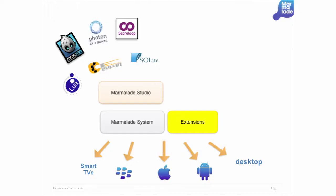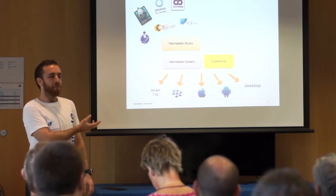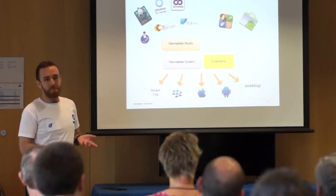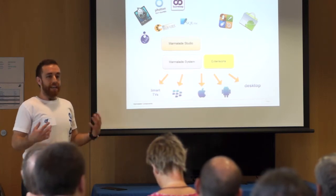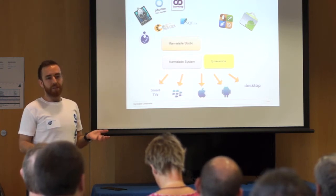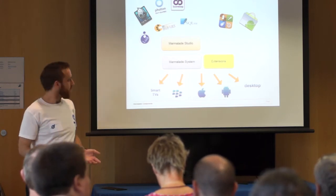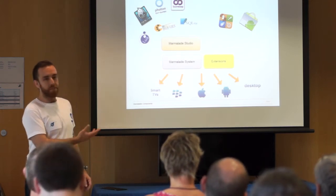What we then did is we built extensions — I think that was in Marmalade 5. What that lets you do is write down to the system level so you can extend our abstraction layer. So you can do things like put in Game Centre on iPhone or the Google Play Store to do billing. You can write some middleware around that to wrap it up and make it easy to use. From a user's point of view, you're still doing C++ coding, you don't have to use a Mac or the iPhone toolchain or install third-party SDKs. You've still got this nice simple C++ interface, but if you want to extend it to do more things, you can.